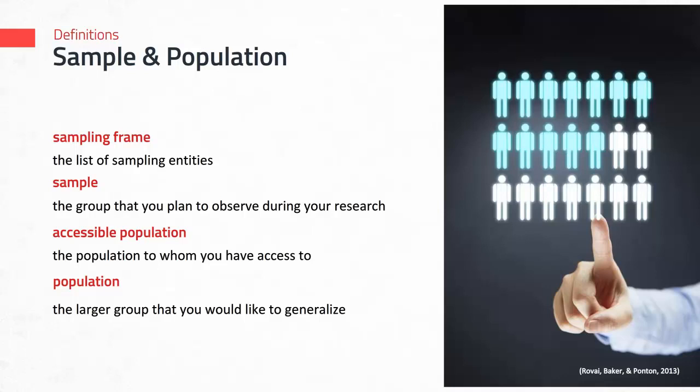The accessible population is the population to whom you have access and can generalize to if you're randomly sampling from it. And finally, there's the idea of population — that's the larger group that you would like to generalize to. Now, these terms and definitions are somewhat abstract, so let's put them in context with a case study of a doctoral student named Samantha.